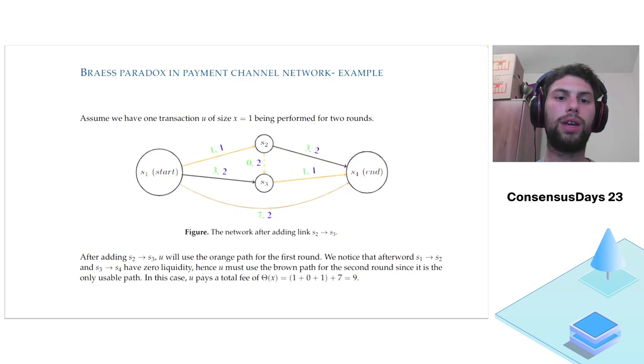But let's see what would happen if we added a channel. If we add a channel and Yu wants to perform two following transactions, in the first round, the cheapest path is the orange path between S1, S2, S3, and S4. Yu will use it and pay a fee of 2. But in the second round, almost all paths become unavailable because there is no liquidity on the path. Yu must use the down path between S1 and S4 and pay a fee of 7. In the total of these two rounds, Yu pays a fee of 9, whereas if the channel between S2 and S3 did not exist, he would pay a fee of 8. As we see, we added a channel and that resulted in a fee increase. That's what we define as Braess's Paradox in payment channel networks.